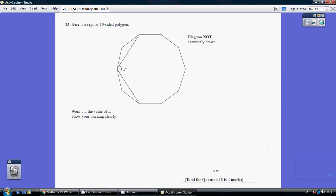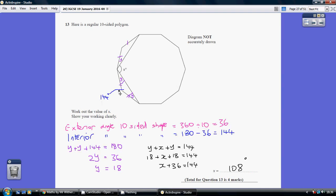Question 13. So, first things first, we've got a 10-sided shape, so we know that an exterior angle of a 10-sided shape will be 360 divided by 10 equals 36.